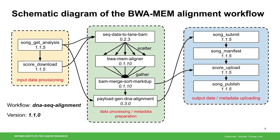This is a schematic diagram of our BWM alignment workflow. It follows our best practices, breaking down the workflow into small single-purpose tools that are independently versioned. The components for input data provisioning and output uploading can be imported into other workflows easily without code duplication. When one component bumps up a new version, the workflow will get a new version bump as well. This is very helpful for tracking workflow reproducibility.